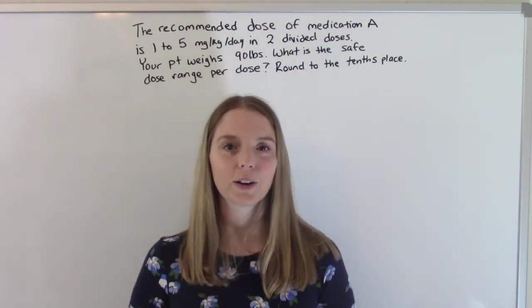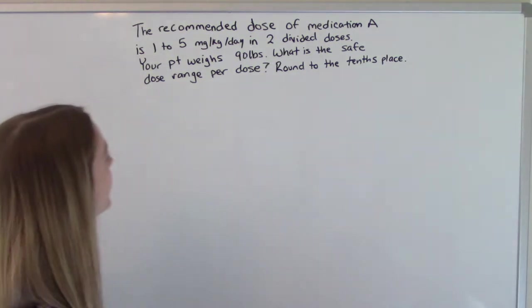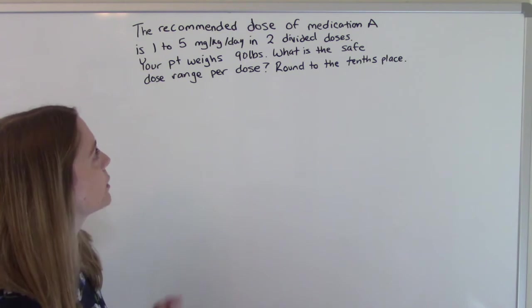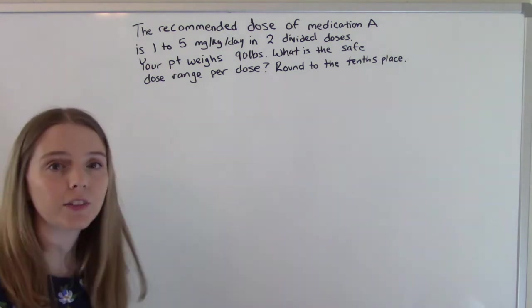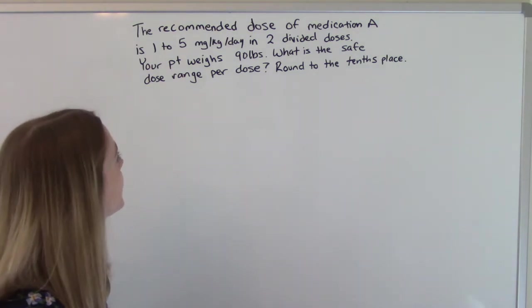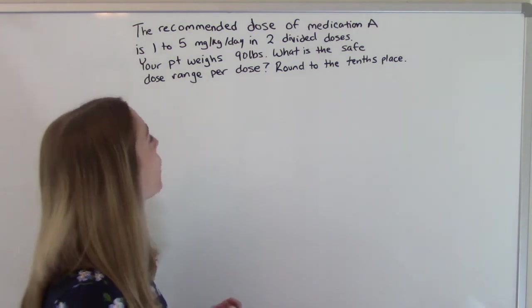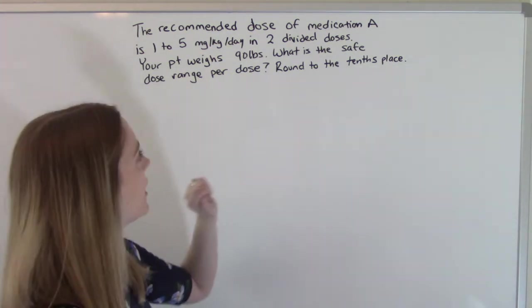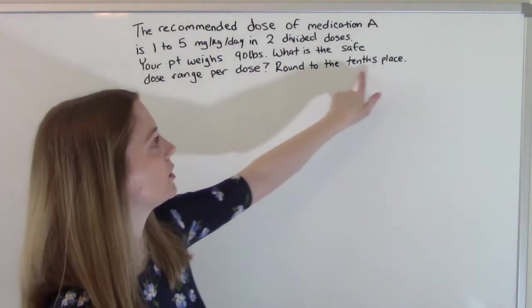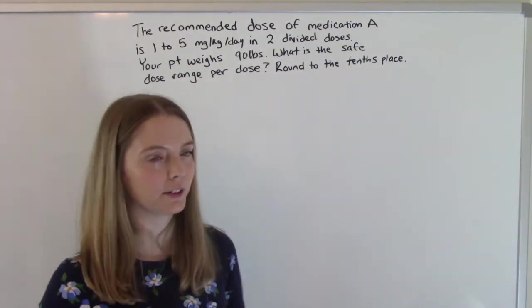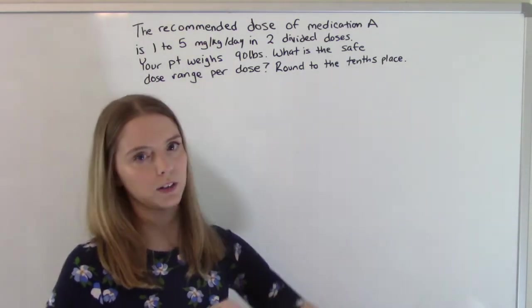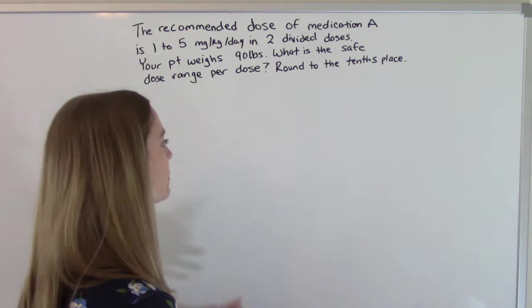Let's get into our first problem. The recommended dose of medication A is 1 to 5 milligrams per kilogram per day in two divided doses. Your patient weighs 90 pounds. What is the Safe Dose Range per dose? And it's also asking us to round to the tenths place. This is actually two separate equations because one is for the minimum and one is for the maximum. Let's start with the minimum.